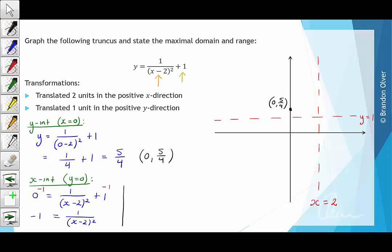Multiplying both sides by x minus 2 all squared, we have negative x minus 2 all squared is equal to 1. Now I'm going to skip a few steps, but if you expand out this bracket and collect all the terms on the left-hand side, so you have a quadratic equal to 0, which we looked at in section 4 is how we solve a quadratic equation, we end up with x squared plus 4x plus 5 is equal to 0.